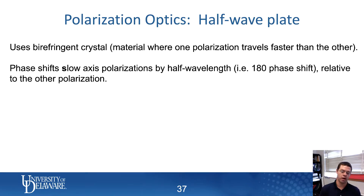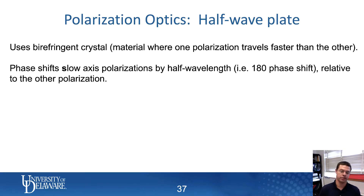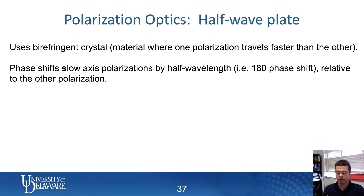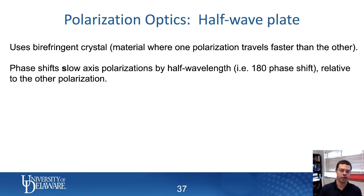One of the more common ones that people use is crystal quartz. Crystalline quartz is an anisotropic crystal, and it turns out that one of the anisotropic directions has a higher speed of light than the other one. So depending on if you align one of the polarizations to the fast axis and the other one to the slow axis, the two polarizations will travel at different speeds of light.